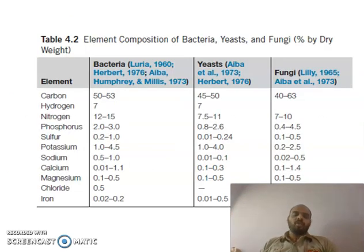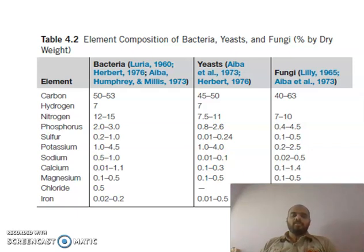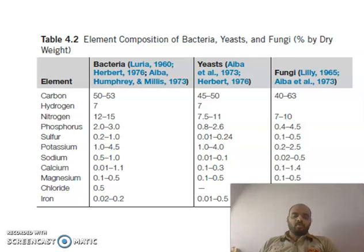The elemental composition of bacteria, yeast, and fungi is shown here. For bacteria, carbon is required at 50–53%, for yeast at 45–50%, and for fungi at 40–60%. The table mentions the percentages of carbon, hydrogen, nitrogen, phosphorus, and other ions required for defined cell types. If you have any queries, you can contact me. That is all for today — see you in the next class.